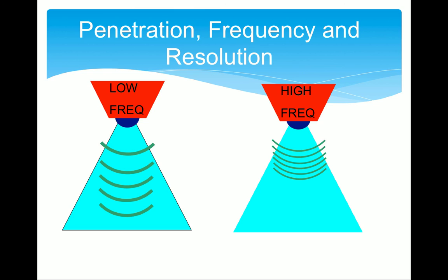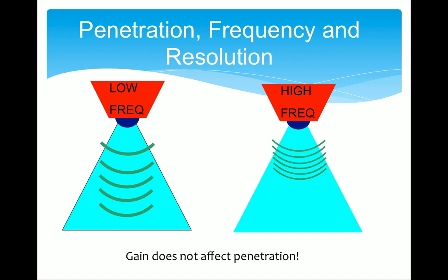One thing we often see with ultrasound beginners is when they're struggling with not enough penetration they try to turn up the gain on the ultrasound machine. This just makes everything look whiter but it doesn't change penetration. Basically the machine is just turning up the volume knob on the echoes it's getting — it's not getting a better echo. Now that you've got some basic concepts down you should be able to understand how ultrasound can be used in a clinical context. Go check out some other videos. Thanks.